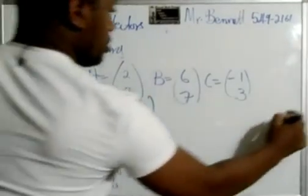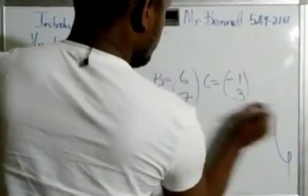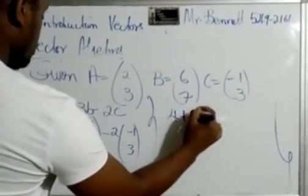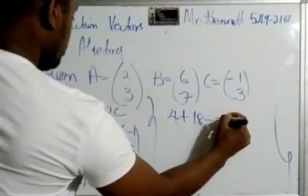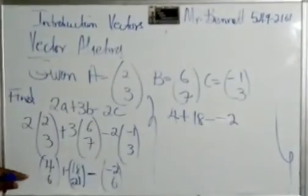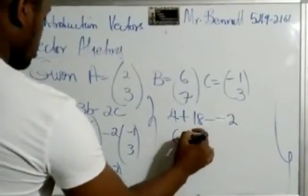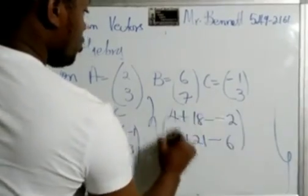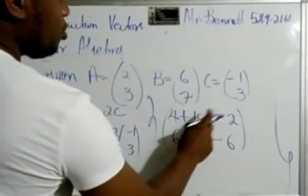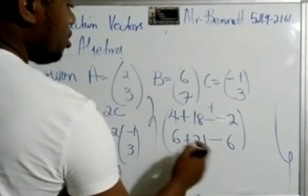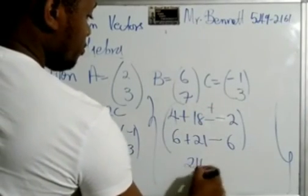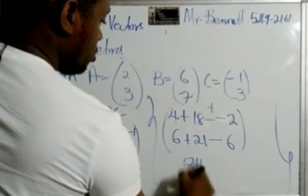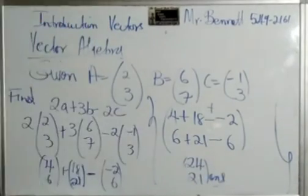Now what I want you guys to do, let's put them under the big umbrella. So it will be 4 plus 18 minus negative 2. Put them out like this so you can see the signs. 6 plus 21 minus 6. So that will be 22 plus 2, that's 24. 6 plus 21 is 27 minus 6 is 21. And that will be your answer.